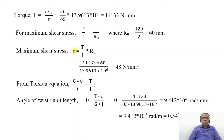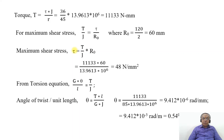The result is 9.412 into 10 to the power of minus 3 radians per meter. Converting that to degrees gives 0.54 degrees per meter length. This is all to find the solution for the above problem.